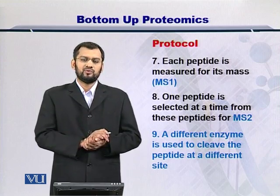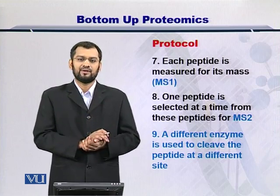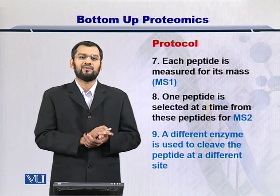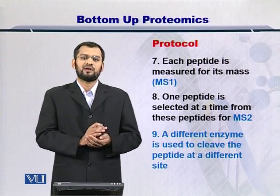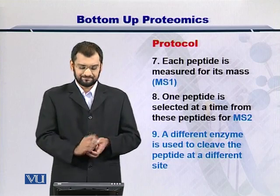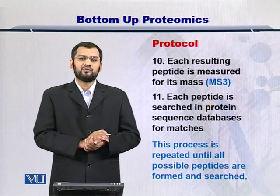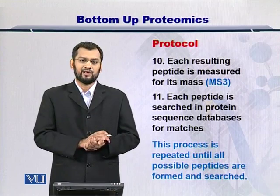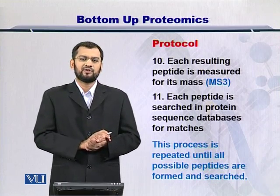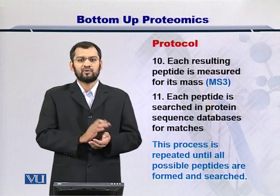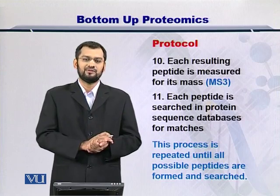What if you want to do another kind of cleavage? In that case, you can treat the peptides with some other enzyme. The new enzyme, let's say enzyme number two, will cut at those sites which are specific to that enzyme. In this way, you can cut a peptide at multiple amino acids. Once you have cut the peptide at the newer site, then you can measure its molecular weight as well. This can be an MS2 or an MS3, and so on. You can then proceed as you did with MS1 into the protein sequence databases and measure the peptides formed from the in silico digestion of those proteins from the database.